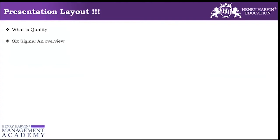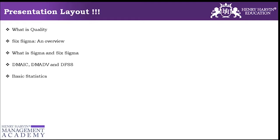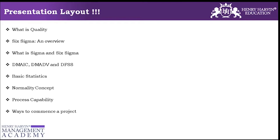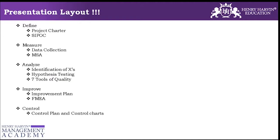We will have certain things to start with: what is quality, six sigma as an overview, what is sigma and what is six sigma. There are different methodologies used in six sigma like DMAIC, DMADV, and DFSS. We will also cover basic stats, which is very important in Black Belt training. We will have the normality concept, process capability, ways to commence a project, and we have Define, Measure, Analyze, Improve, and Control. That is a very high-level overview of what we are aiming at.